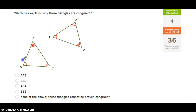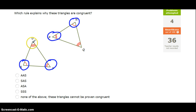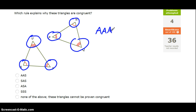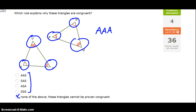This next one, let's see what we've got here. Angle S is congruent to angle N, angle T is congruent to angle P — they both have two tick marks — and angle U is congruent to angle Q — they both have three tick marks. So we've got angle-angle-angle congruence. Now, none of our four shortcuts are angle-angle-angle; they all involve some sort of side, and we've got no congruent sides here. So again, none of the above — the triangles cannot be proved congruent.